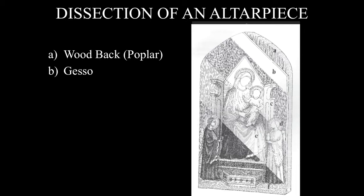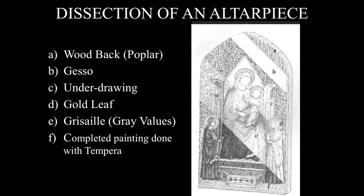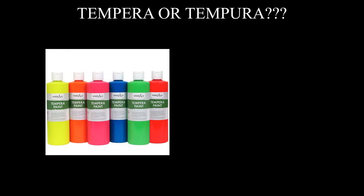Level C is the underdrawing — the outline of the image. Level D is the gold leaf that is attached. Level E is the grisaille, or gray values, indicating how light or dark an object will be. The completed painting is then finished using tempera paint. One reason tempera was used during this time period is because oil paints, which we're more familiar with, hadn't quite been invented yet.